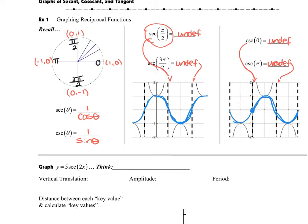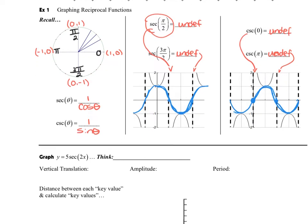And anywhere it crosses the x-axis is going to then create these vertical asymptotes. So using that idea is how we can actually get our own graphs when we want to graph secant and cosecant.